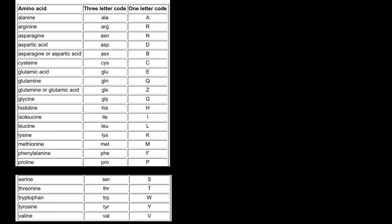Our first amino acid is going to be serine, and it is the only amino acid that starts with S. So it is very easy to memorize that the first three letters specify this amino acid: S, E, R. And the one-letter abbreviation is going to be S. So it is very easy to memorize.